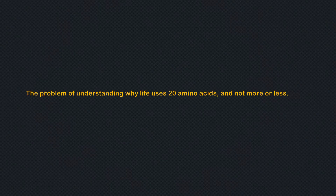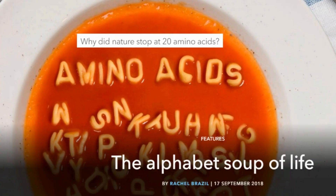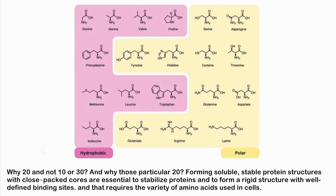Another relevant question is: why are these 20 — in some cases 22 — amino acids used in life and not another set? Why 20 and not 10 or 30, and why those particular 20? Forming soluble, stable protein structures with close-packed cores is essential to stabilize proteins and form a rigid structure with well-defined binding sites, and that requires the variety of amino acids used in life.